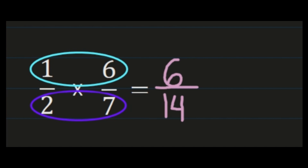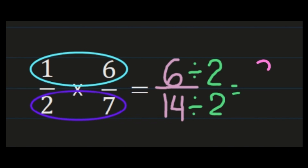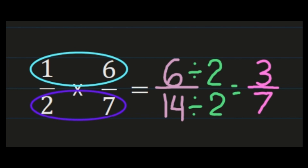We don't have an improper fraction so we don't need to worry about that step, but we do need to simplify if needed. 6 and 14 are both even numbers so they share a common factor of 2. I'm going to take 6 and divide it by 2. 6 divided by 2 is 3. Then 14 divided by 2 is 7. So my final answer is 3 sevenths.